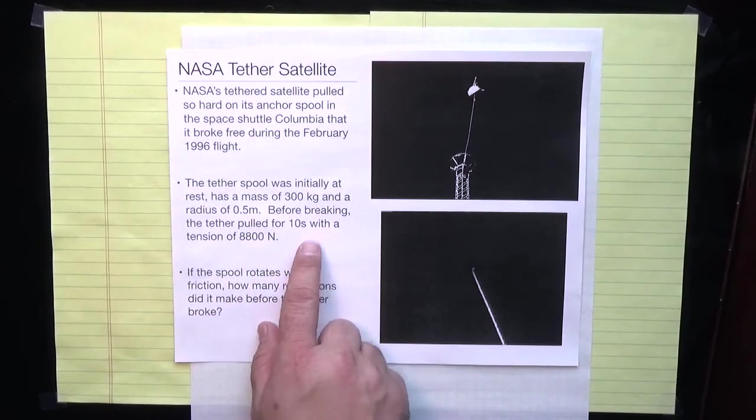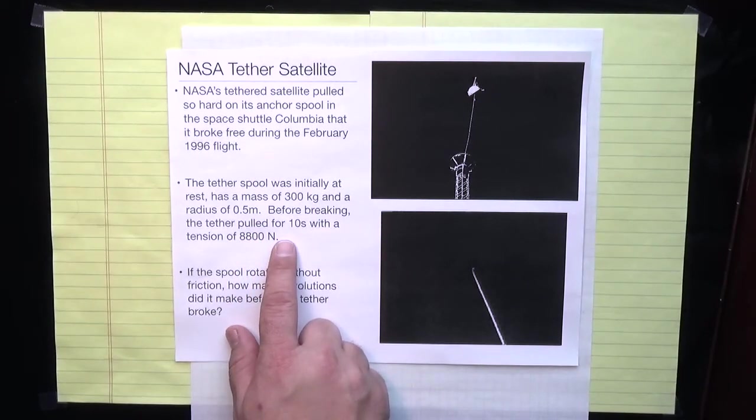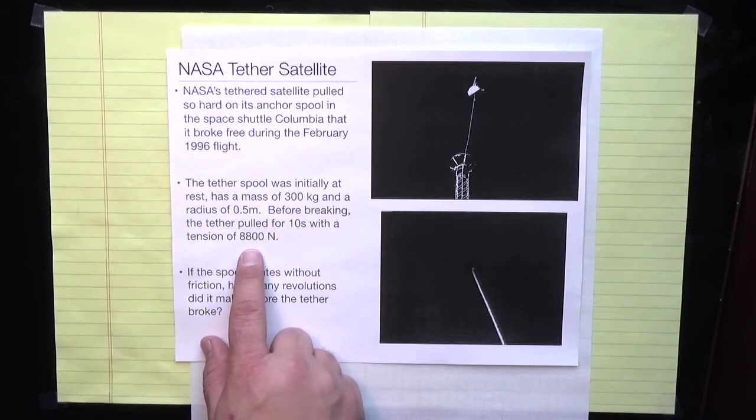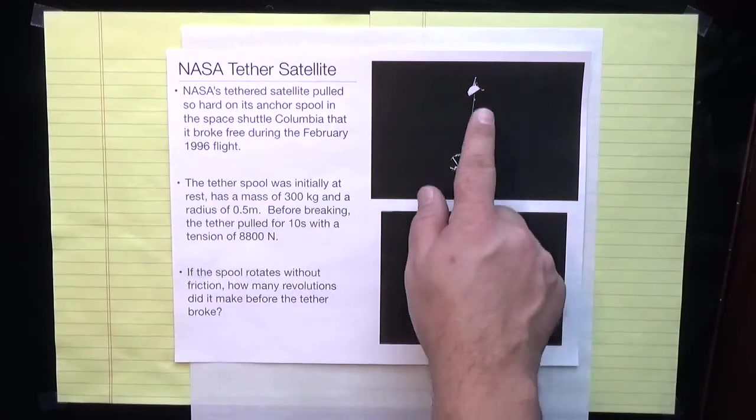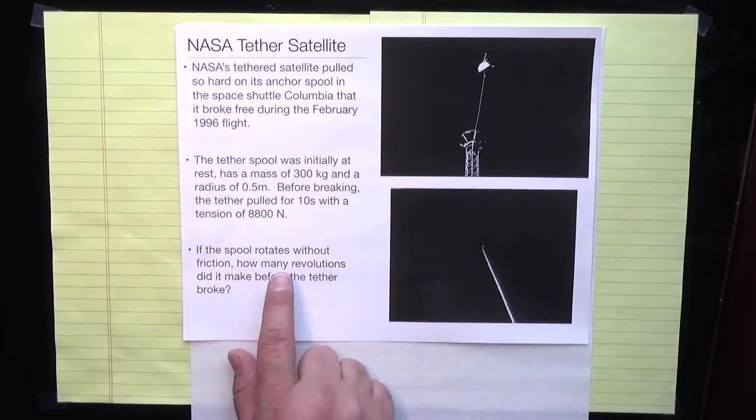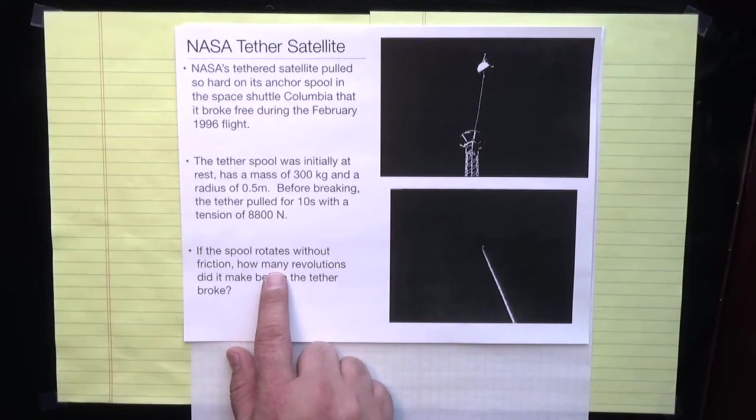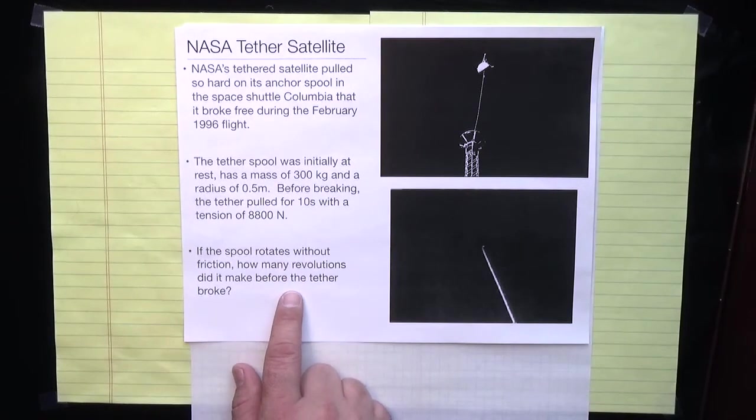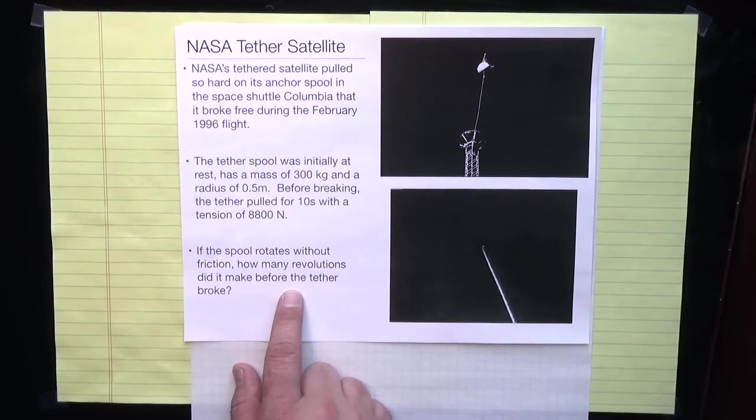Before breaking, the tether was pulled for 10 seconds with a tension of 8,800 newtons. That's when the satellite is on the end of the tether. What we want to know is, if the spool rotates without friction, how many revolutions does it make before the tether actually breaks?